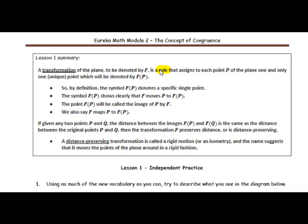If any two points P and Q, the distance between the images F(P) and F(Q) is the same as the distance between the original points P and Q, then the transformation F preserves distance or is distance-preserving. A distance-preserving transformation is called a rigid motion. This is important to know. It's also called an isometry. And the name suggests that it moves the point in the plane in a rigid fashion or in a stiff fashion. So don't get caught up by the vocabulary here. We'll learn it as we go through each lesson.